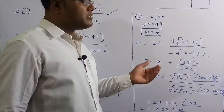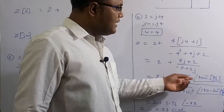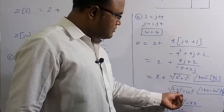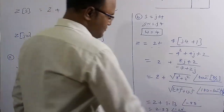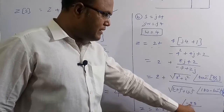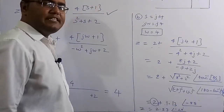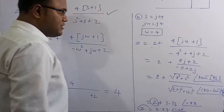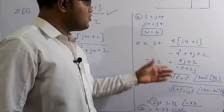Converting to polar form: the numerator 2+8j has magnitude √(8²+2²) at angle tan⁻¹(8/2), and the denominator −7+2j has magnitude √(7²+2²) at angle 180°−tan⁻¹(2/7). After simplification we get 2 + 1.13∠−88°. Adding 2∠0°, the final result is Z(j4) = 2.33∠−28°. This completes case (b).